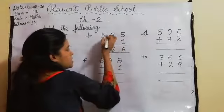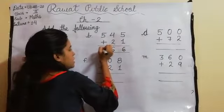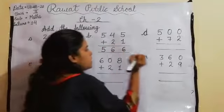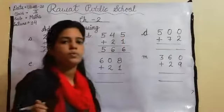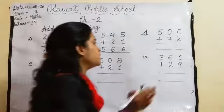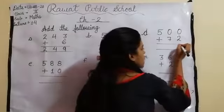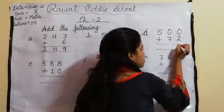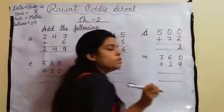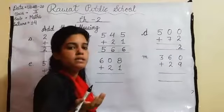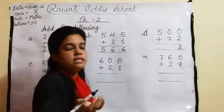Okay number 6. And then 5 ke neeche kuch bhi nahi hai. Then 0 plus 2. Kabhi bhi kisi bhi number mein agar 0 plus karte hain to answer hamein wohi number milta hai jis mein hum woh number 0 plus karte hain. Agar 3 mein 0 plus 3, 0 plus 3 to 3. 0 plus 7 to 7.